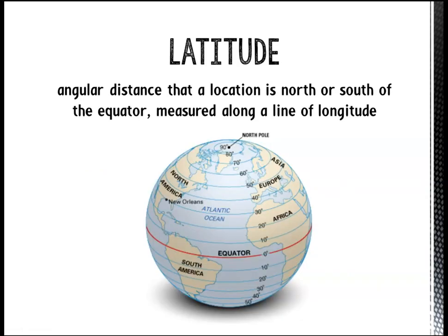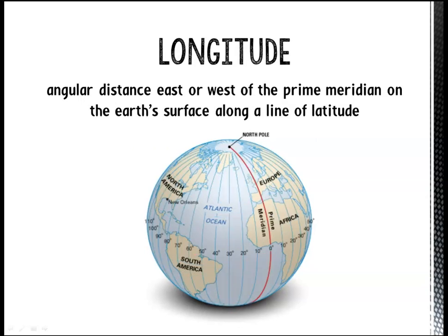Latitude is the distance, usually measured in degrees, north or south of the equator, while longitude is the distance east or west of the prime meridian. Latitude runs north and south, while longitude runs east and west.